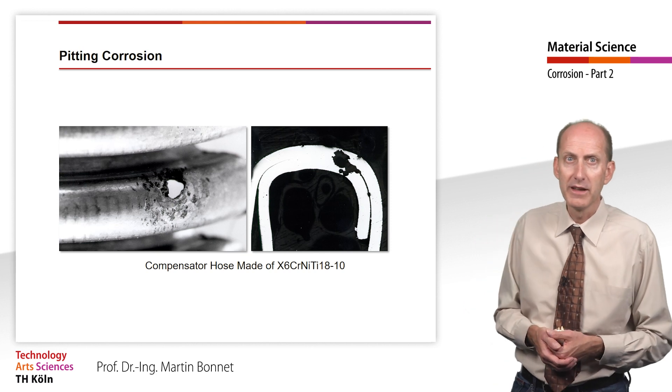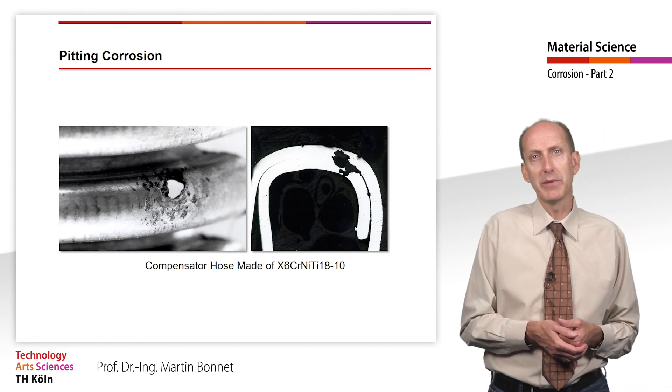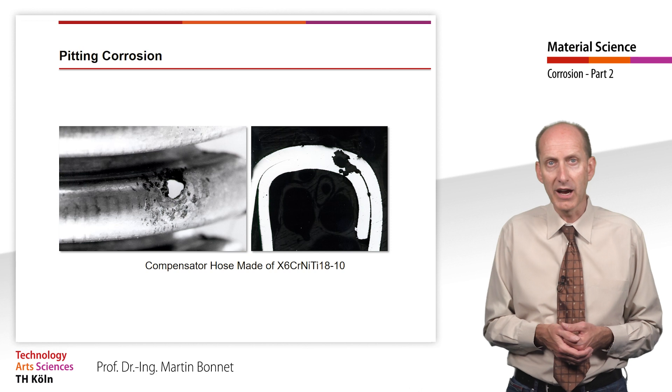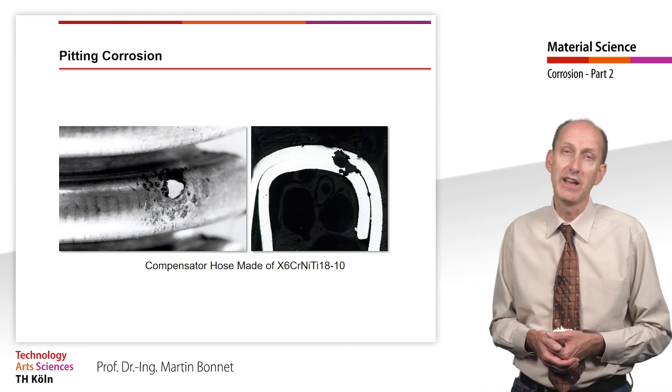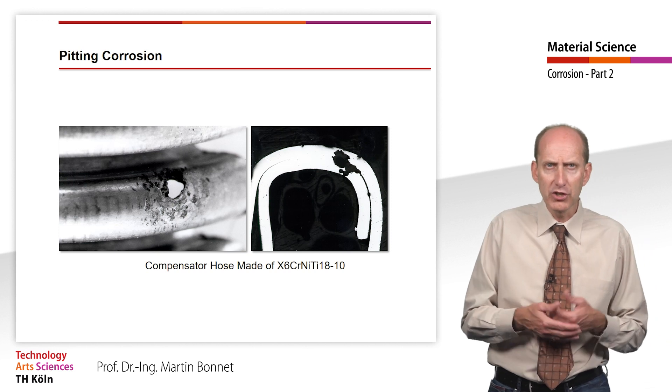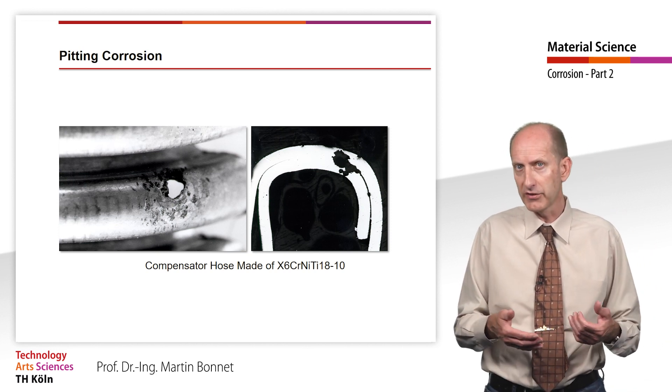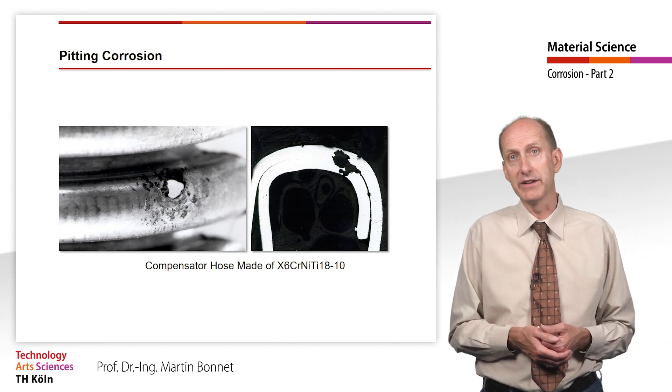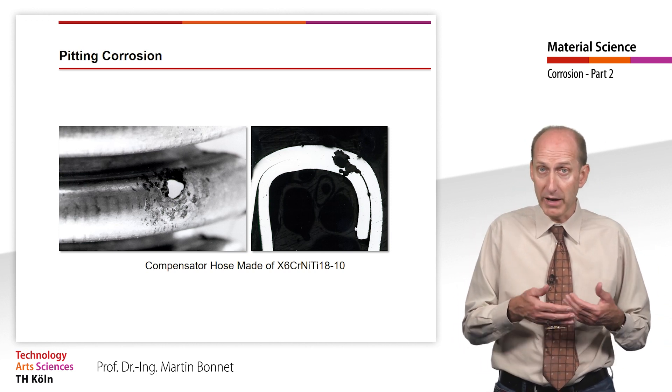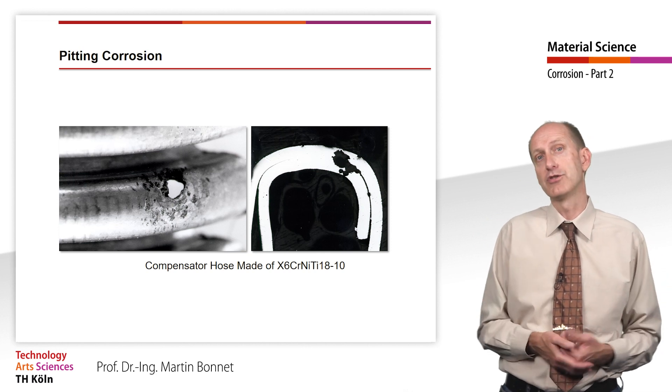The photos show a compensator hose made of X6CrNiTi 1810, a high alloy steel with 18% chromium, which should be sufficient to form a passive layer of chromium oxide. However, due to the presence of chloride ions, the passive layer was penetrated and pitting corrosion occurred.